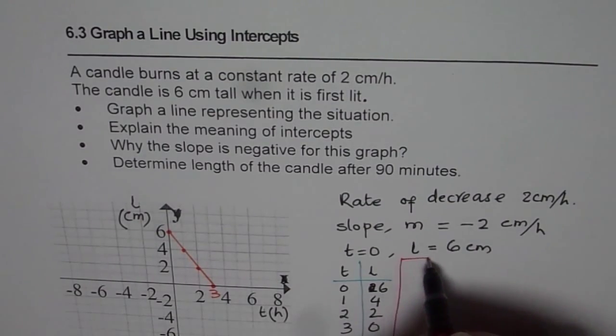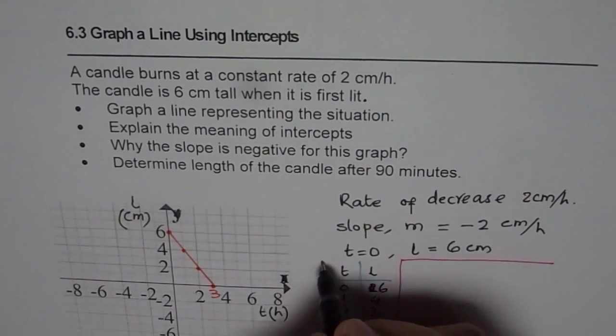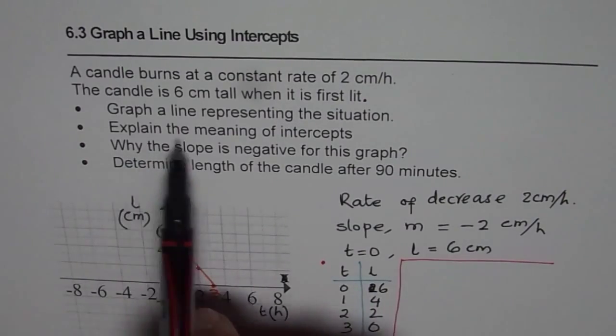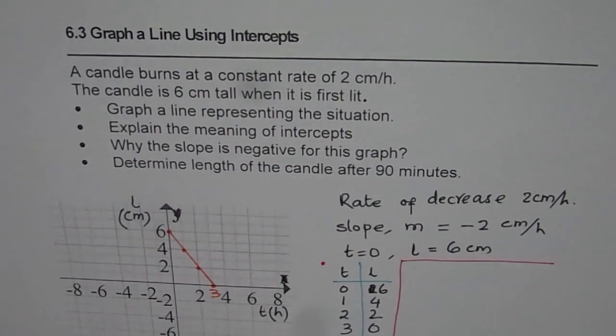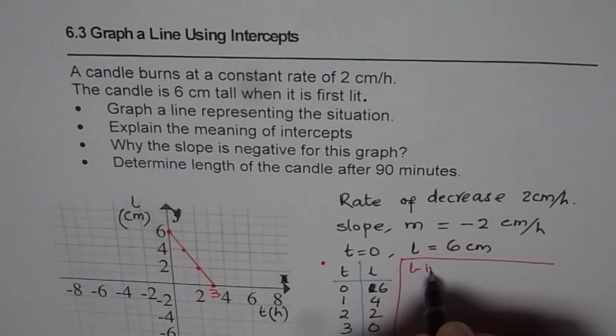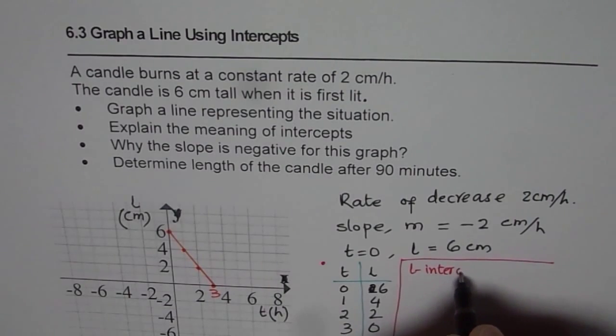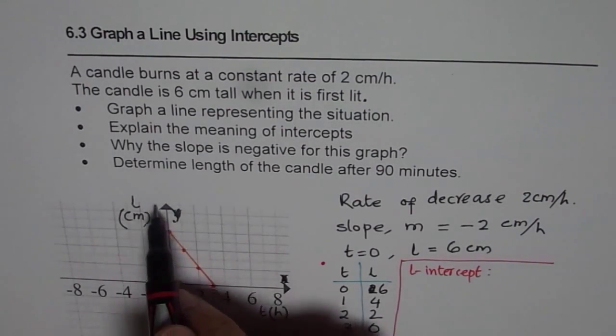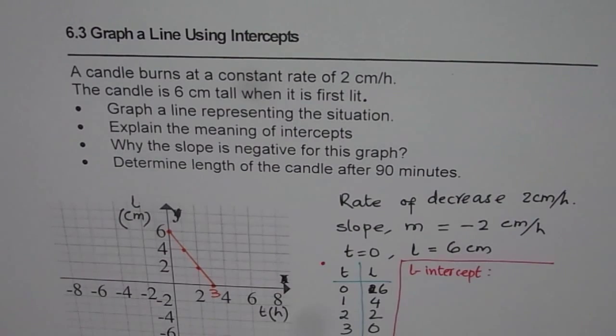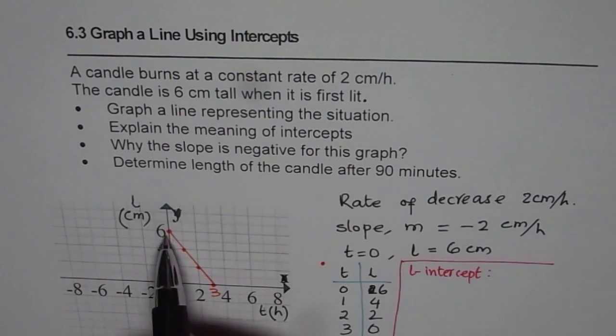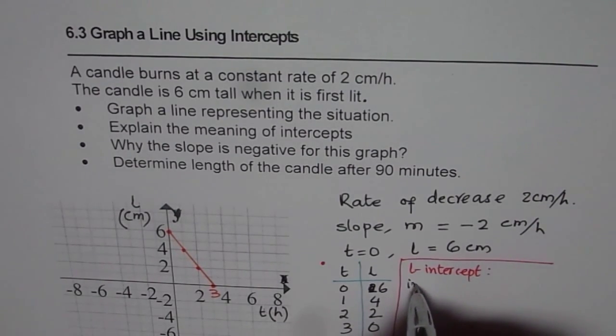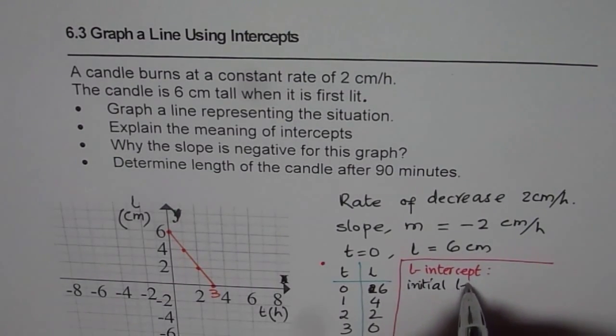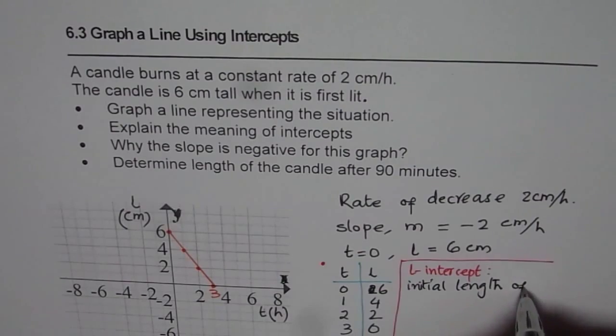Now, let's get back to the other parts of this question. This was our part A. Explain the meaning of intercepts. So there are two intercepts here. First intercept we'll call as l-intercept. Simply because variable along the independent variable is l. Now, what is the meaning of l-intercept 6? It gives you initial length of the candle.